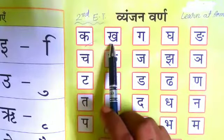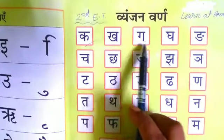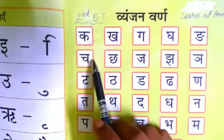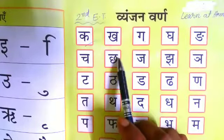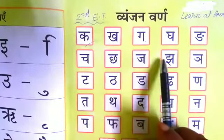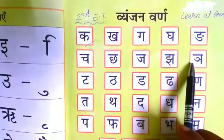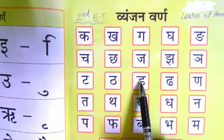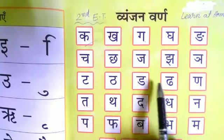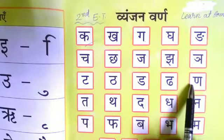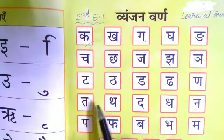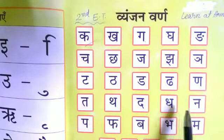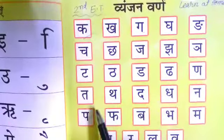ख, ग, घ, म, च, छ, ज, न, त, ठ, ड, ध, मर्धन, त, ठ, द, ध, न।